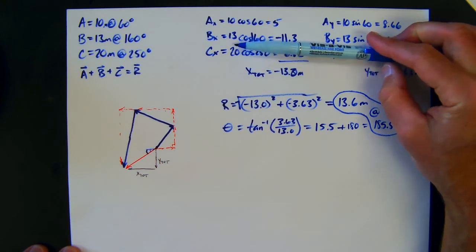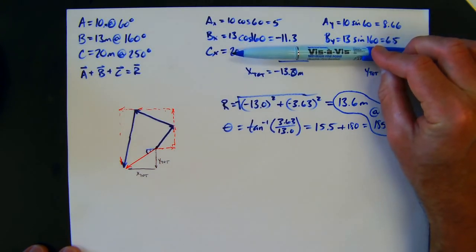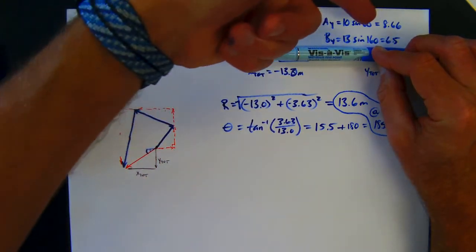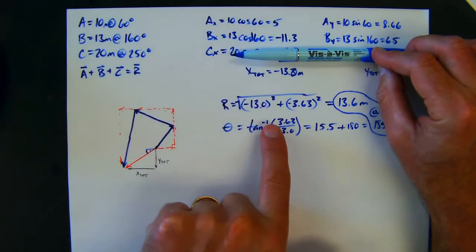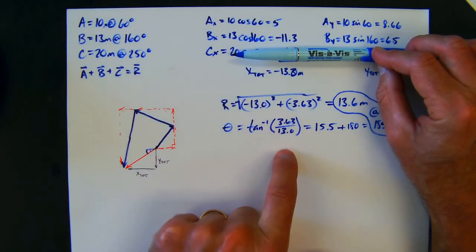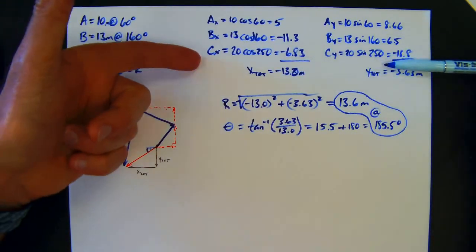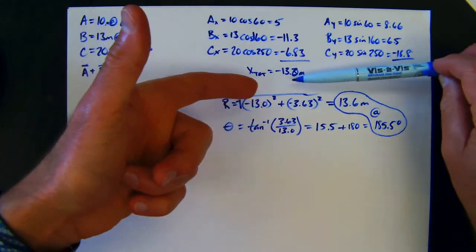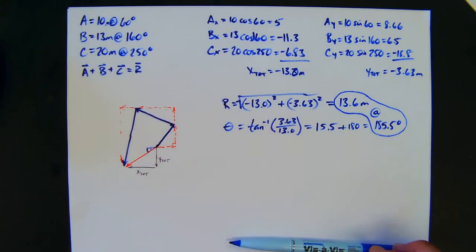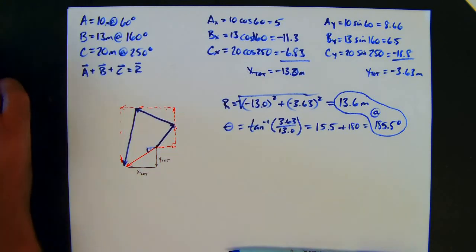All it would do is get rid of one of those lines, but you're still going to get your x total, your y total, add them up, and then you're going to use Pythagorean theorem and inverse tangent. If you have four or five vectors, it'll just add lines over here, but you're still going to get an x total, y total, and add them up to get your Pythagorean theorem and your inverse tangent.